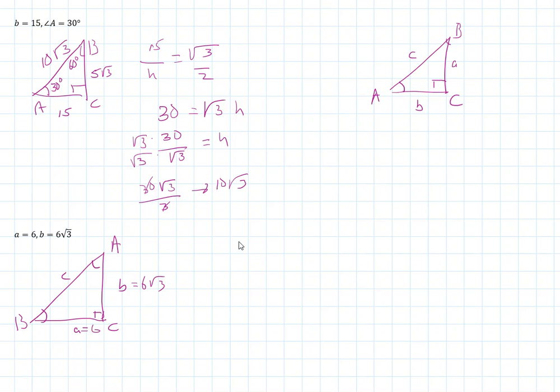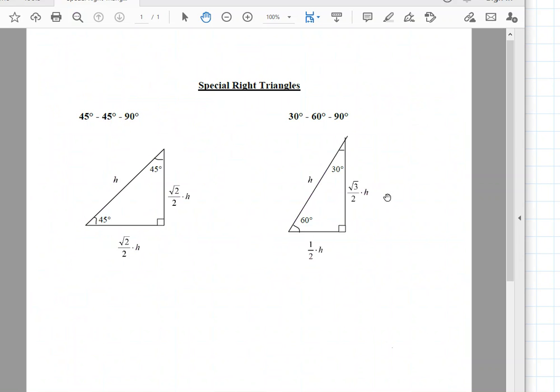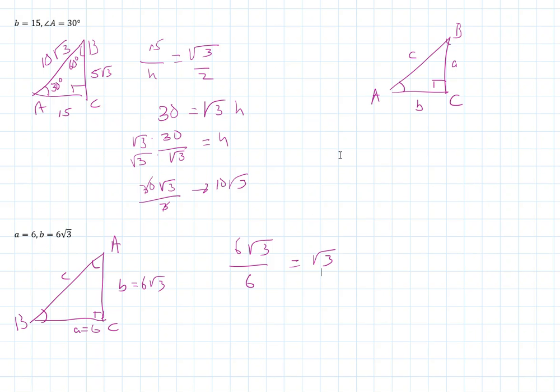So if you take one leg and divide it by the other leg, you get root 3. If you go back to your special right triangles and see where does that happen, where do we get a ratio of root 3 when we divide two of these side lengths together? Clearly, if you take this root 3 over 2 times h and divide it by 1 half h, you're going to get root 3. So if I take square root of 3 over 2 h divided by half h, the h's cancel and you get root 3.